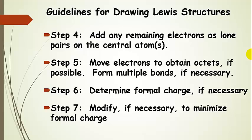Step 6 is to calculate the formal charge. What we're mostly interested in is non-zero formal charge — if the formal charge comes out to be zero, we generally don't put it on the structure, but if it's non-zero, then we want to show that on our Lewis structure. Step 7: sometimes we don't get the most preferred structure right off the bat. If that happens, we're going to need to modify, or again move electrons around, to try to minimize formal charge. That discussion will also be in a later presentation.